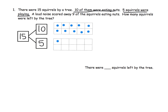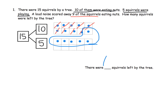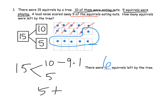Now the loud noise scared away 9 squirrels, so we cross off 9 of them: 1, 2, 3, 4, 5, 6, 7, 8, 9. How many squirrels were left by the tree? We've got these 5 plus that 1, so the answer is 6. What we want to see is: 10 minus 9 equals 1, then 5 plus 1 equals 6. We want students to see that without borrowing or regrouping, the 9 is subtracted from the 10, not the 5.